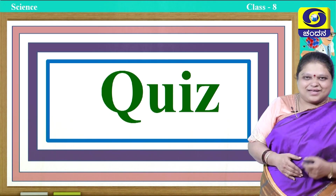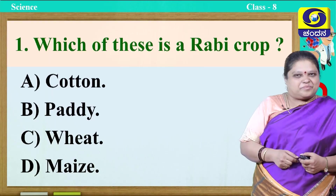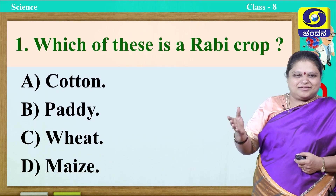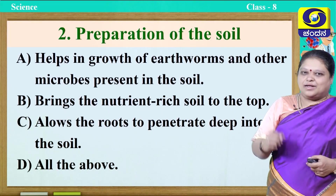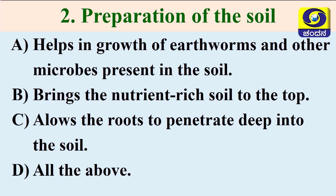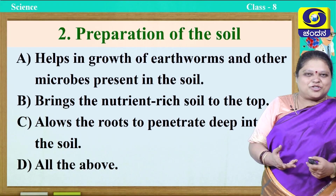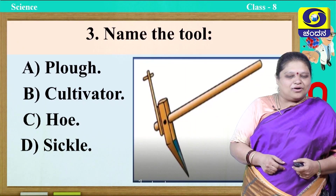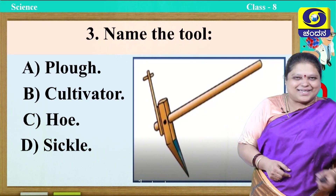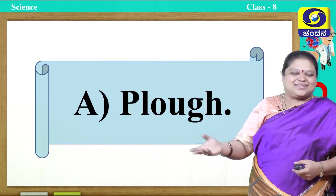Now let us come to quiz — I want you to answer them. Which of these is a Rabi crop? Cotton, paddy, wheat, or maize? The correct answer is wheat. Next one: preparation of the soil — first option helps in growth of earthworms and other microbes present in the soil; next, brings the nutrient-rich soil to the top; next, allows the roots to penetrate deep into the soil; and last is all the above. The correct answer is all the above. Next one, name the tool: plow, cultivator, hoe, or sickle? The answer is plow.